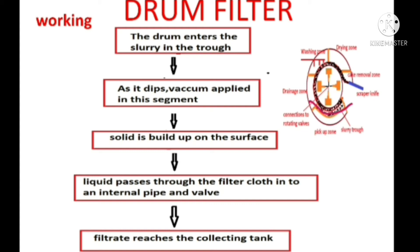Our drum filter is dipped in a slurry reservoir containing slurry. When we switch on the drum filter, vacuum starts to operate. Because of this vacuum, the surface picks up some amount of slurry. The slurry adheres on the drum surface, and the liquid from the slurry is filtered through the curved surface via the filter cloth. Liquid passes through the filter cloth into the compartment, travels through the internal pipe, and reaches the collecting tank in the center of the drum.